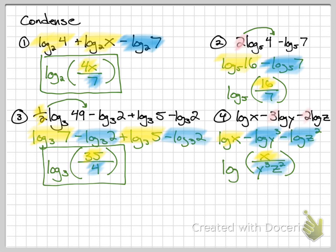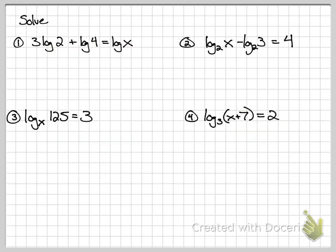So condensing is important. It'll be on its test as its own little problems, and then it's super important in solving. So solving log problems. First thing you should notice in number 1 is that there's 2 logs on one side. Anytime there's 2 or more logs on one side, you need to condense it. That's why we learned condensing.